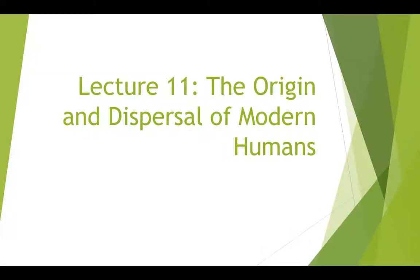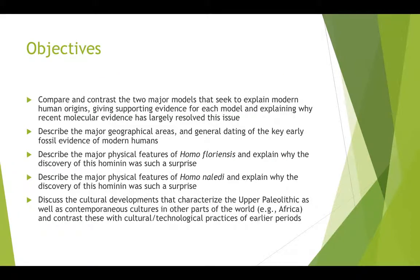This week we'll be talking about the origin and dispersal of modern humans, specifically addressing the hypotheses at the forefront of explaining how, when, and why modern humans became the dominant and then the only hominin on the planet. Our objectives are to compare and contrast the two major models that seek to explain modern human origins, giving supportive evidence for each model and explaining why recent molecular evidence has largely resolved this issue, and to describe the major geographical areas and general dating of key early fossil evidence of modern humans.